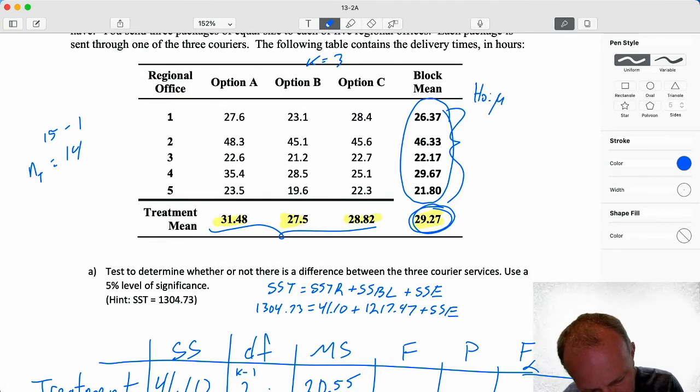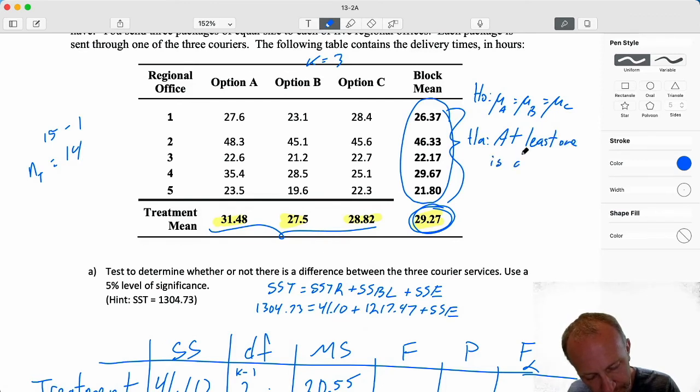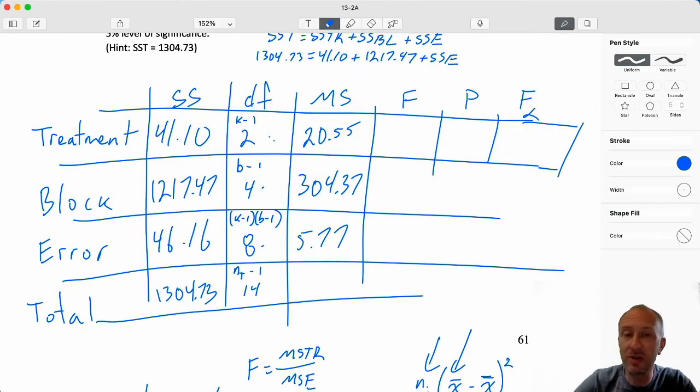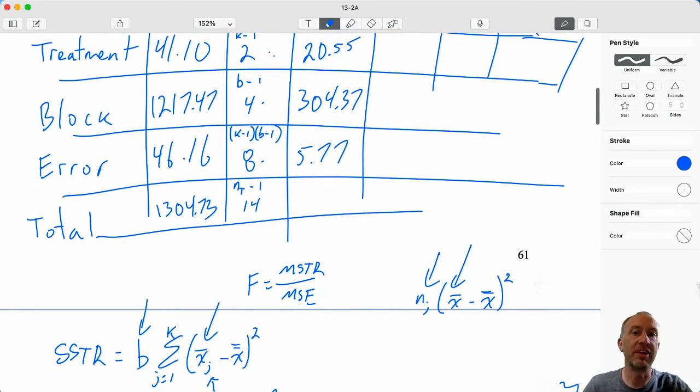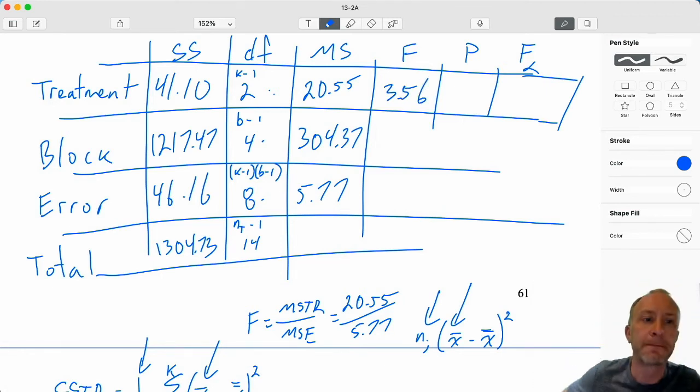Null. We would say mu A is equal to mu B is equal to mu C. The alternative, it is what you think it is. At least one is different. Okay, so we're doing an F-test. If the alternative is true, MSTR is large relative to MSE. So let's look at this. Our F-statistic is 20.55 divided by 5.77. I have a test statistic of 3.56.